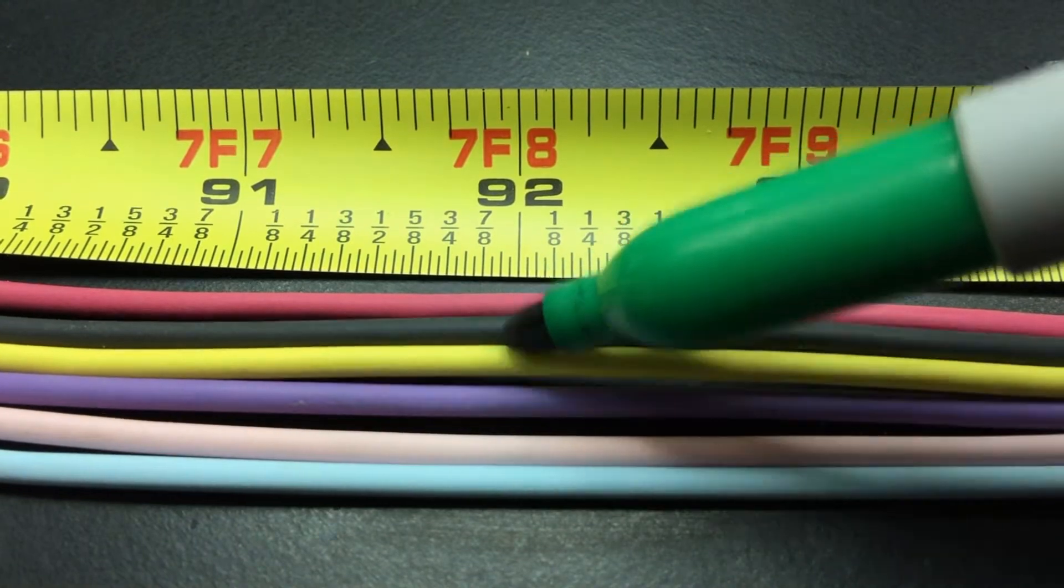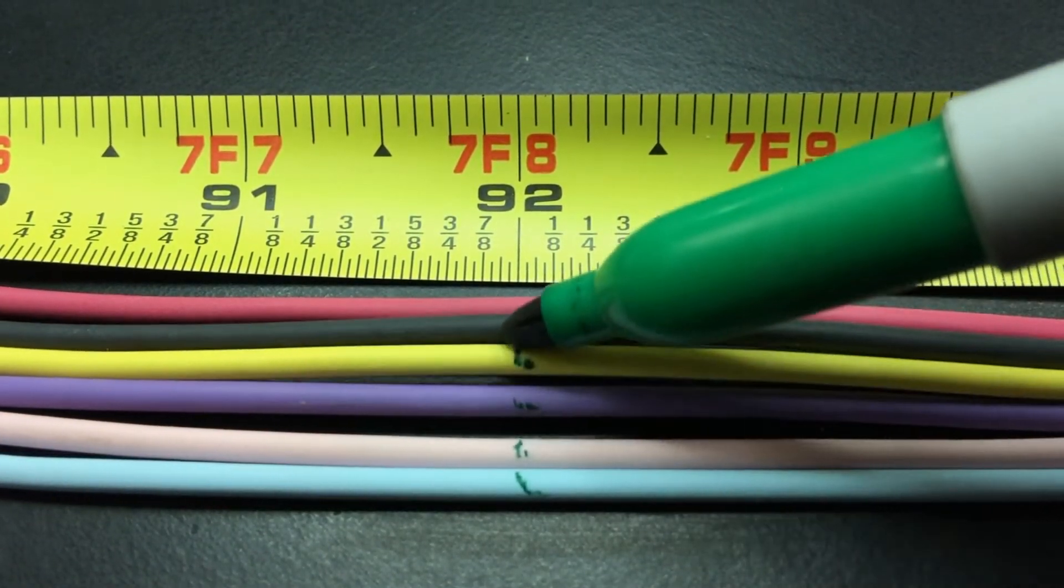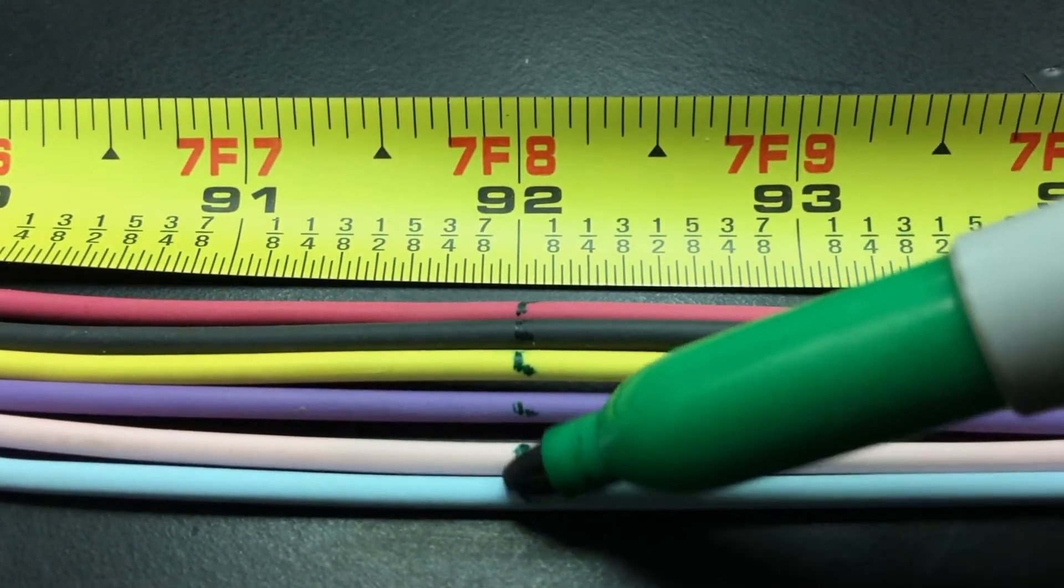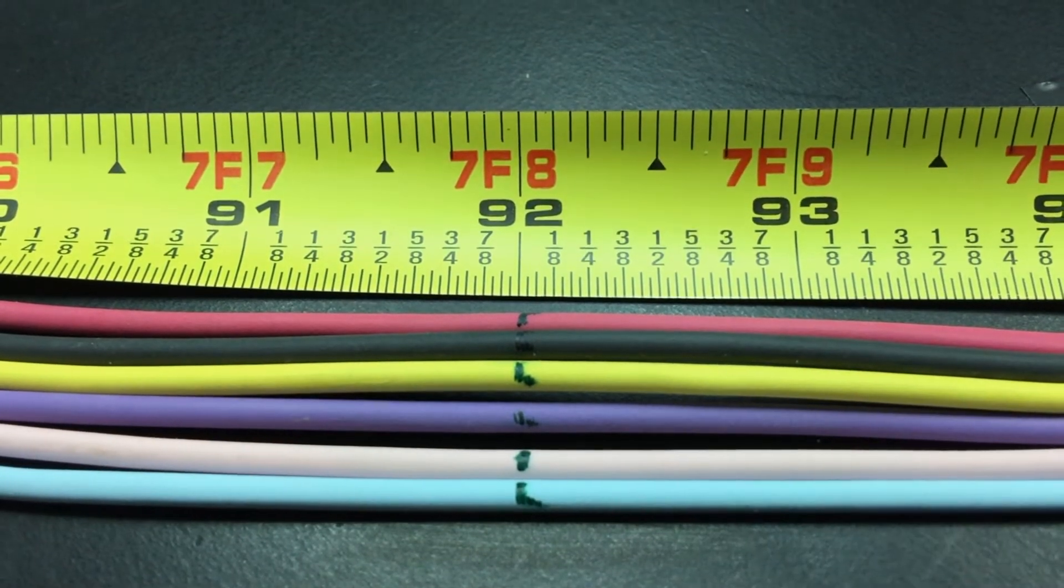Next, measure and mark buffer tubes 7 through 12, red to aqua, 92 inches from the cable breakout.